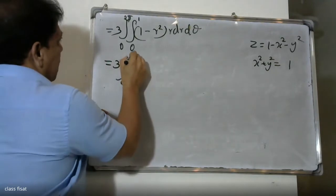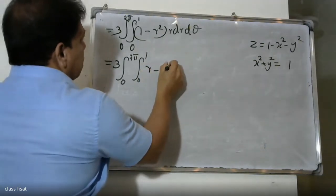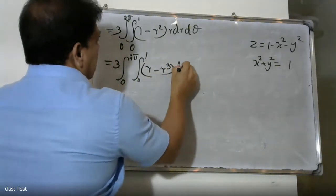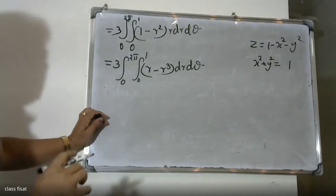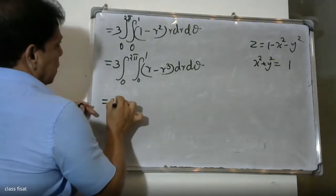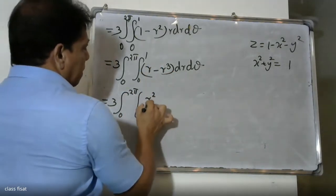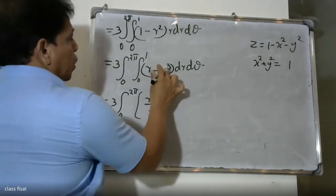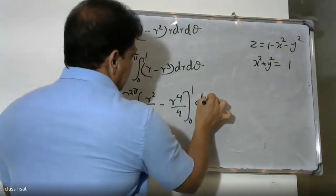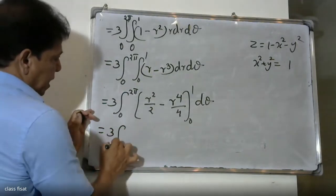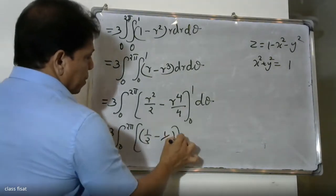The integral becomes 3 times the integral from 0 to 2pi, then 0 to 1, of (1 minus r squared) times r dr d-theta. Expanding: r minus r cubed. Integrating: r squared over 2 minus r to the 4th divided by 4, evaluated from 0 to 1.